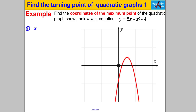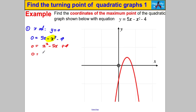Have a go at this one — pause the video. Step 1: find the x-intercepts where y = 0, so solve 0 = 5x - x² - 4. The negative x² is problematic, so multiply both sides by -1 to get 0 = x² - 5x + 4. That factorises nicely to (x - 4)(x - 1), giving x = 4 or x = 1. So the two x-intercepts are (1, 0) and (4, 0).